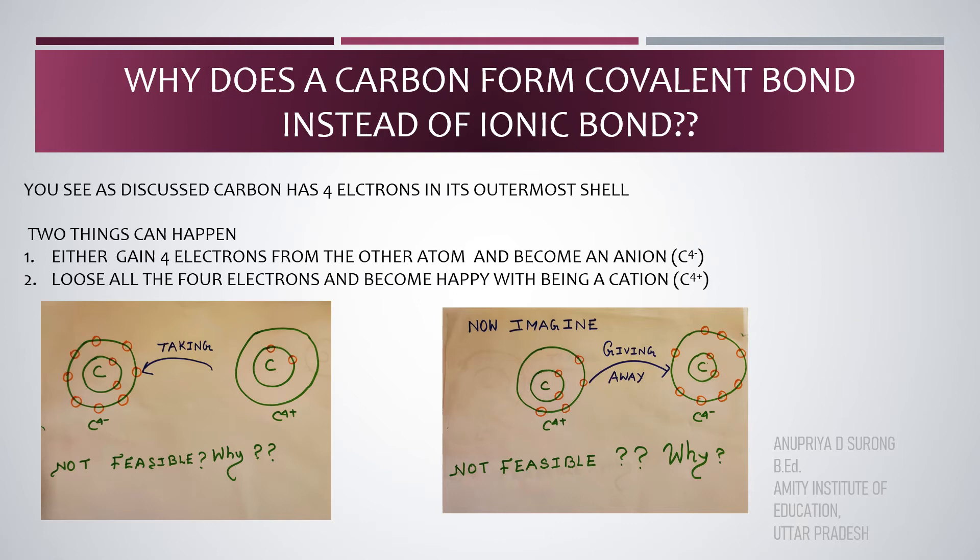Firstly, either gain 4 electrons from the other atom and become an ion. So, carbon can either gain 4 electrons from the other atom and become an ion. Look at the picture on the left side. Secondly, it can lose all the 4 electrons and become happy with being a cation. Look at the picture on the right side. What do you think? Pause the video, get your notebook, and start drawing these electronic configurations, and try to see how the give and take is happening between the carbon atoms.